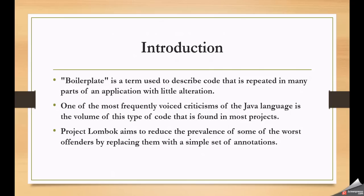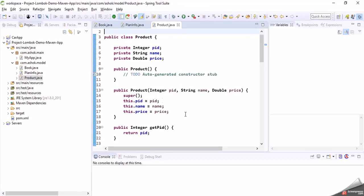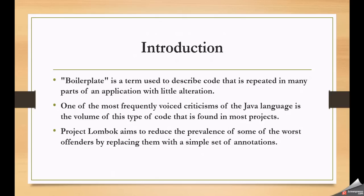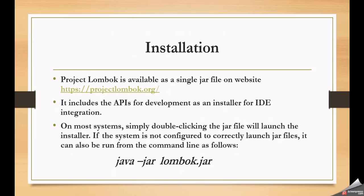So any code that we are writing at multiple places — same code written at multiple places — can be called boilerplate code. For example, we've seen our model classes with setters, getters, constructors, toString, equals, and hashCode. This kind of code appears in almost all model classes. To avoid that boilerplate code in our model classes, we can go for Project Lombok.